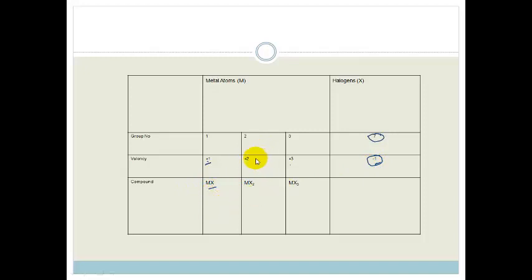If we had a metal in group 2, it has 2 arms or the ability to make 2 bonds. The halogen's only got 1, so we need 2 halogens to fill up our 1 metal. Similarly, if we are in group 3, we are going to have 3 possibilities or 3 bonds, a valency of 3.